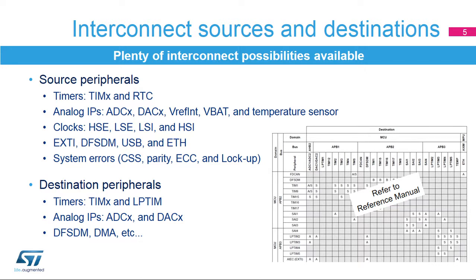The main peripherals having autonomous interconnections are connection sources: timers, analog IPs, clocks, extended interrupt event controllers, digital filters for sigma-delta modulators, USB interfaces, and system errors.